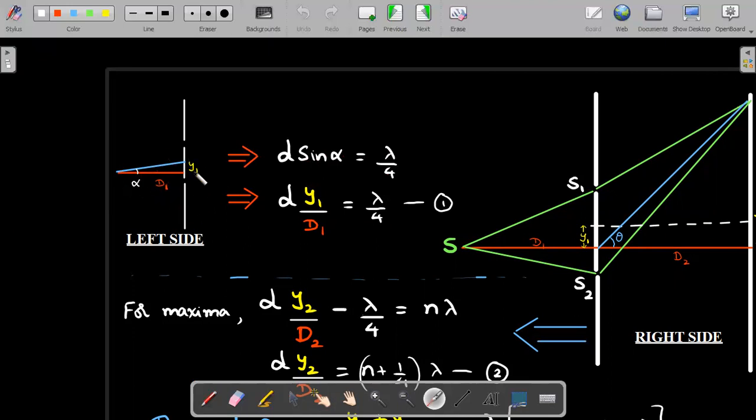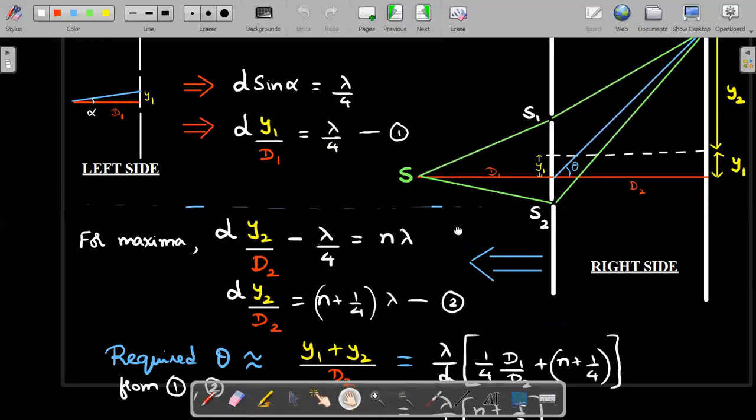And in this small angle, the value of alpha should be Y1 by D1. So that's what I have written at this particular place. So d into Y1 by D1 should be lambda by four is the first equation that I get from the left side of the diagram. Once I move to the right side, which is even more interesting.